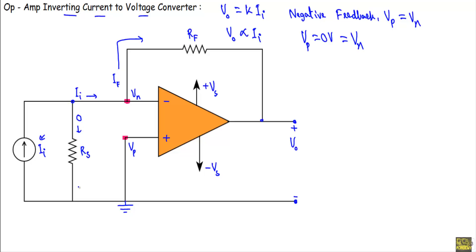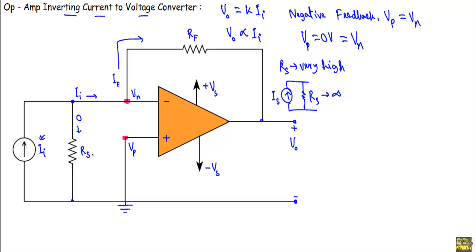A very high resistance RS is connected in parallel with the current source II. RS should be very high because in an ideal current source it has a very high resistance RS in parallel, and in the ideal case RS is infinity. Therefore, the current through that path will be very low. For simplification of the circuit, we consider the current in that direction to be equal to 0. Therefore, the current source II will inject current at the inverting terminal.